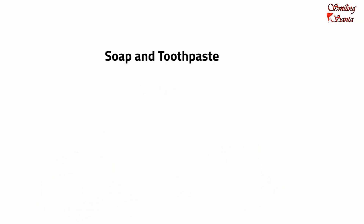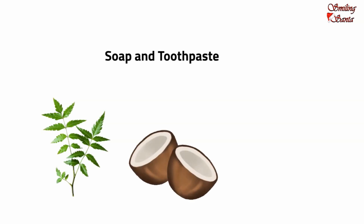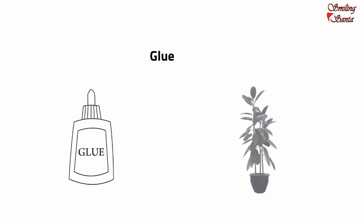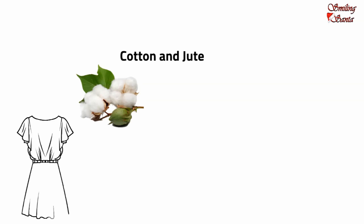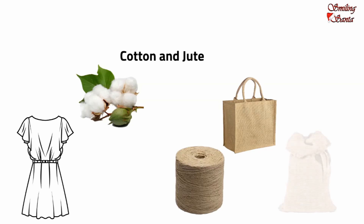Soaps and toothpaste are made from oils and juices of plants like neem, coconut and cloves. The glue that we use to stick things is obtained from plants. We get cotton and jute from plants as fibers. Cotton fibers are used to make cotton clothes, and jute fibers are used to make ropes, bags, mats and sacks.